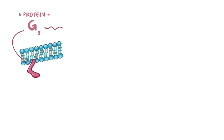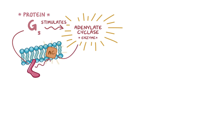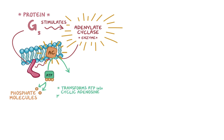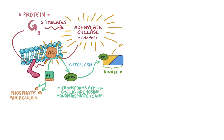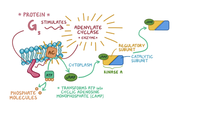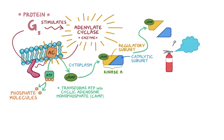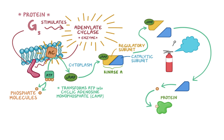Next is protein GS, which stimulates the enzyme adenylate cyclase. Activated adenylate cyclase takes ATP and removes two phosphate molecules, transforming it into cyclic adenosine monophosphate, or cAMP. cAMP moves throughout the cytoplasm and binds to protein kinase A. Protein kinase A has two parts — a regulatory subunit and a catalytic subunit — and cAMP specifically binds the regulatory subunit, causing it to dissociate from the catalytic subunit. It's like pulling the pin out of a fire extinguisher, allowing the catalytic subunit to phosphorylate target proteins and trigger a cellular response.